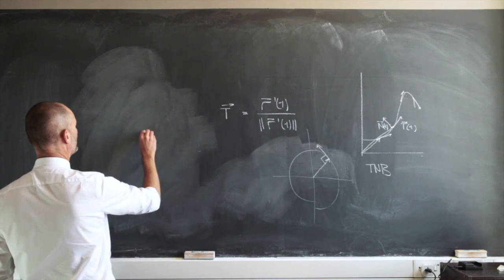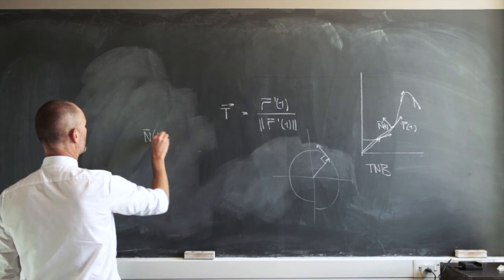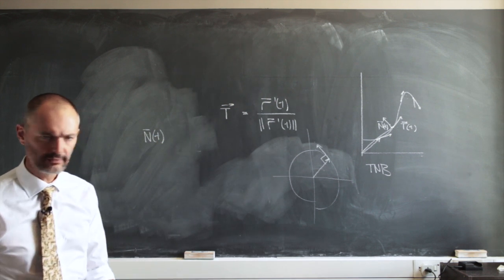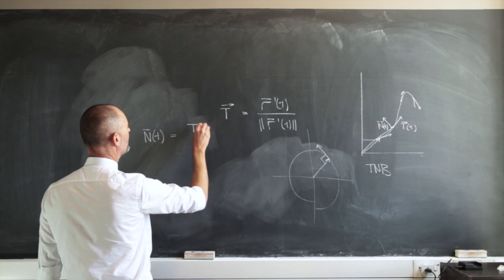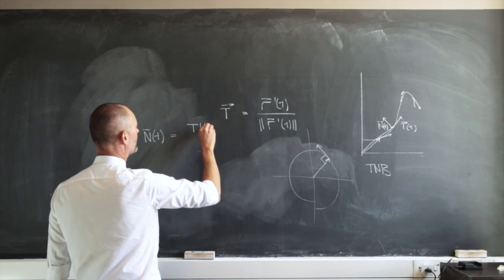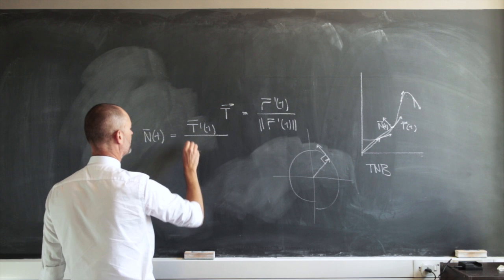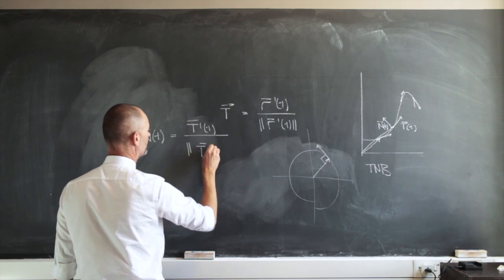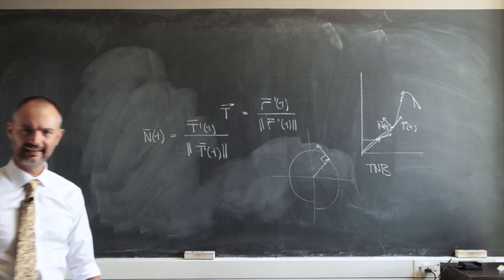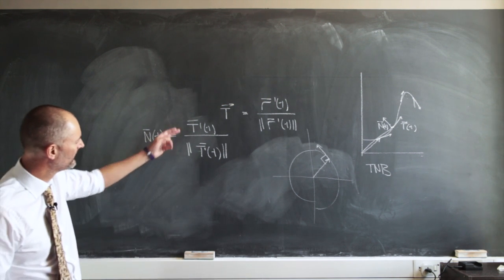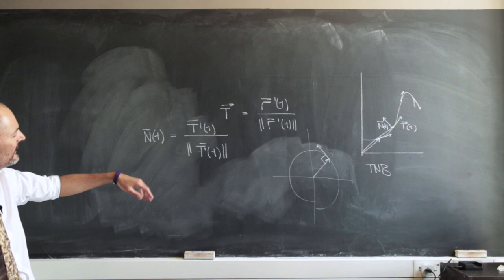So we're going to have this principal normal unit vector that is going to be for us t prime of t over its magnitude.